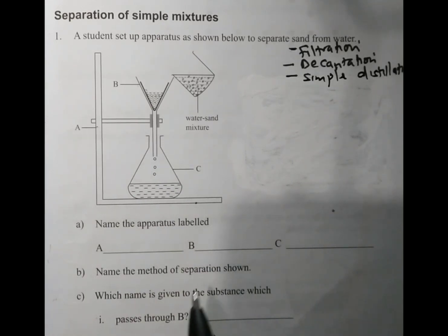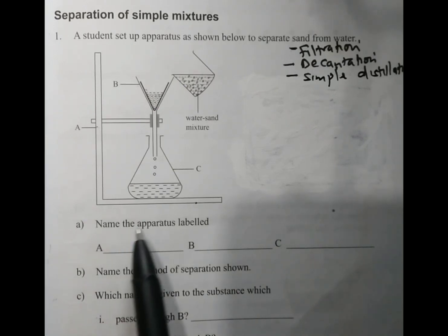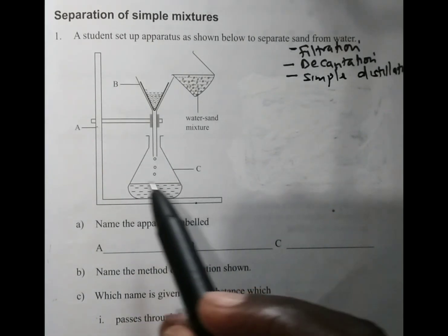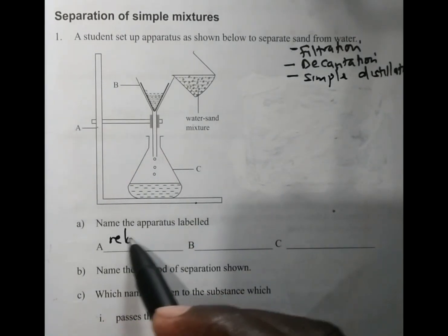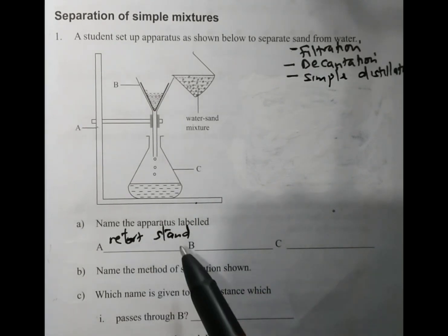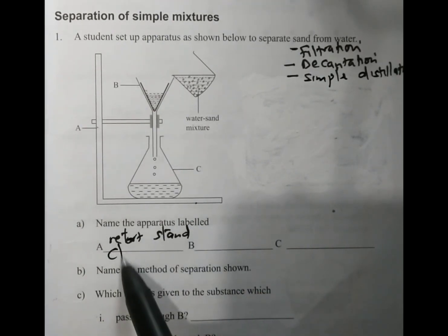The first part of the question we are supposed to answer: name the apparatus labeled A. A is a retort stand, also known as the clamp stand.